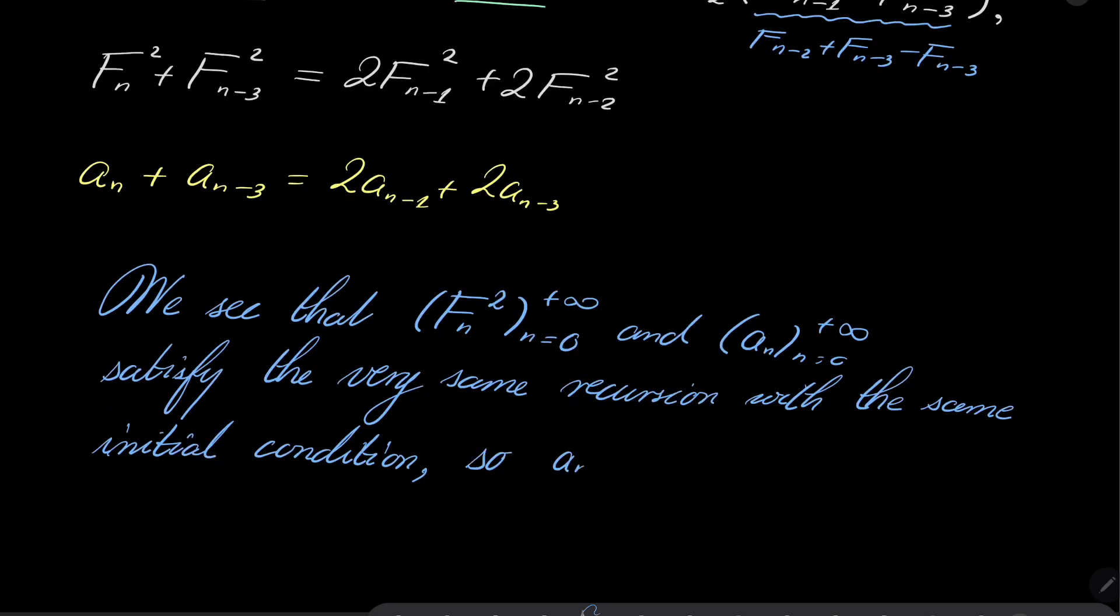So, they are the same. So, A_n equals F_n squared, which closes the proof of my claim and this closes our problem because here we have squares. Every term of Fibonacci sequence is a perfect square—every term of Fibonacci sequence is an integer.